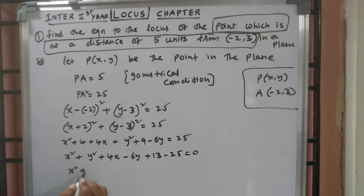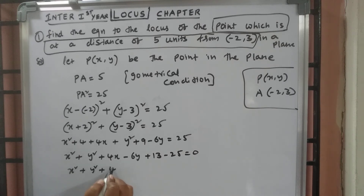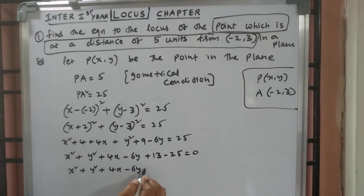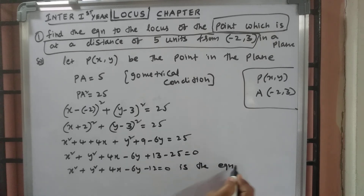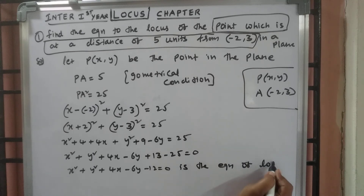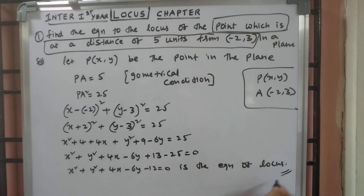Therefore, the equation of locus is X square plus Y square plus 4X minus 6Y minus 12 equal to 0. Thank you.